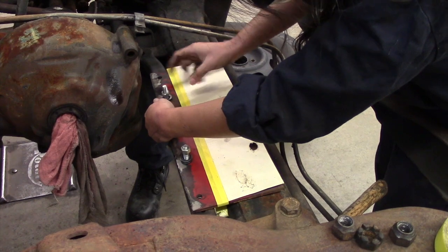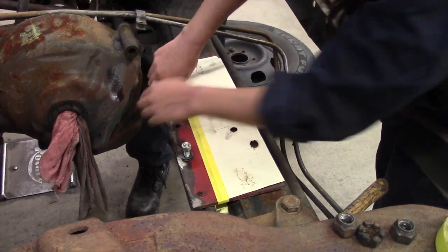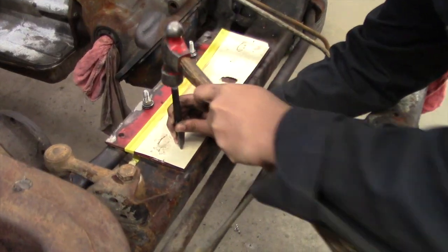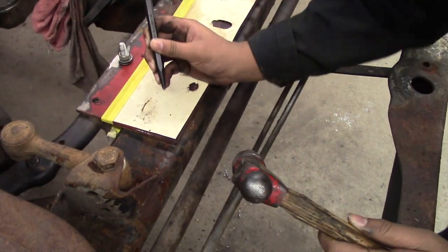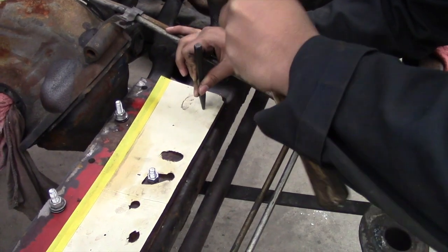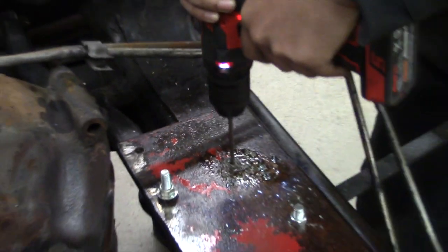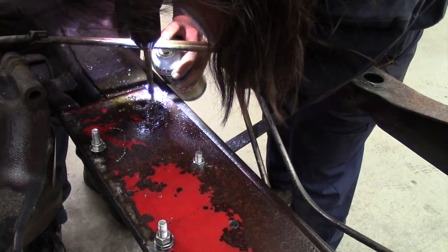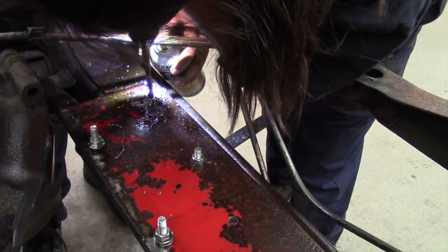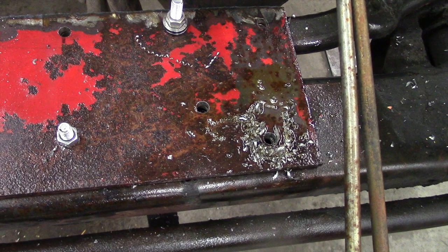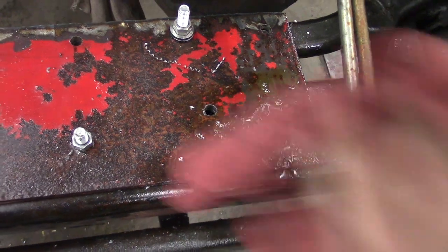The plate was loosely mounted to the drag link. Using our template we marked and drilled the plate to mount to the frame. So when completed, this is how the steering will be locked to the crossmember.